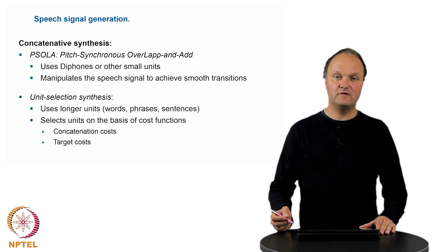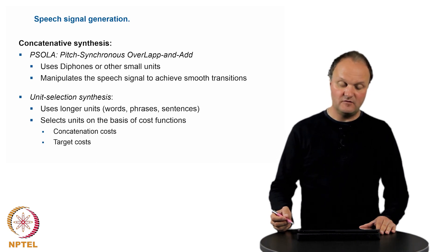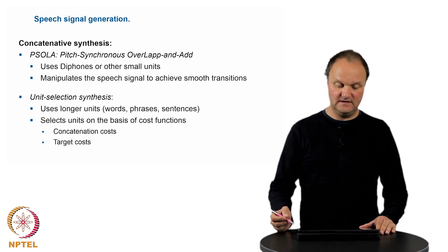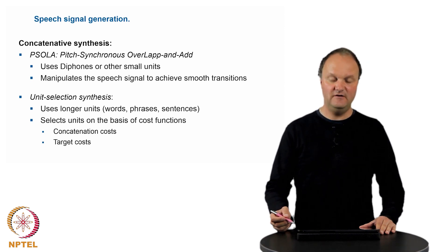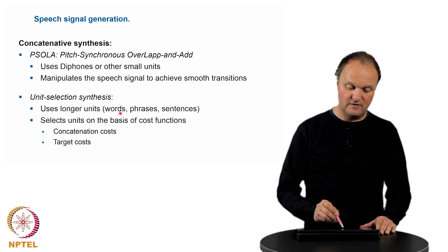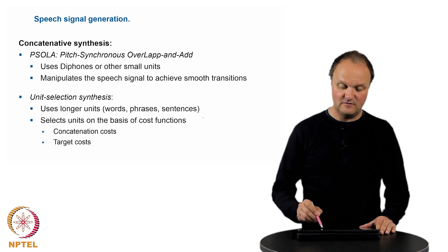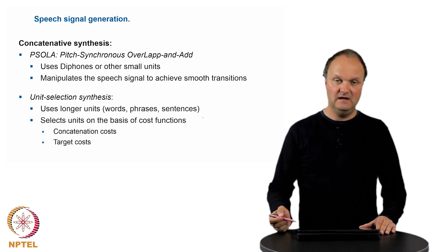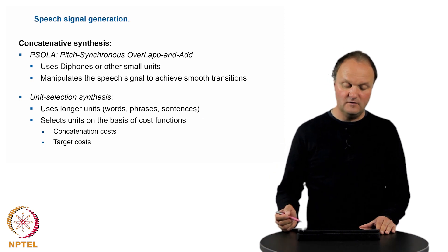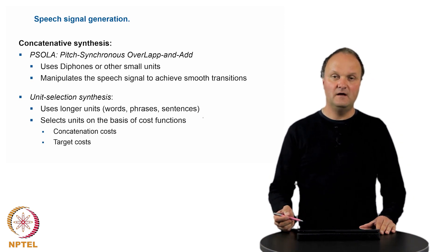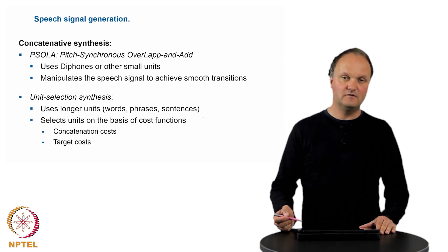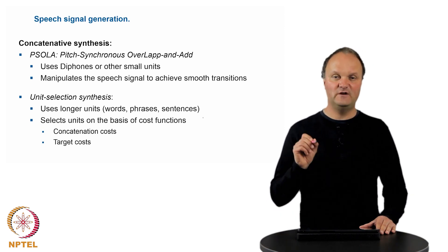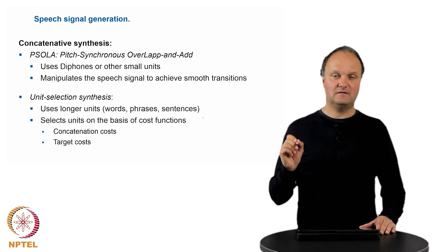People have tried to avoid this unnaturalness by putting less manipulation into the speech signals, and this can be achieved by taking longer units, for example, words or phrases or sentences. If we concatenate those longer units, we have to find the ones which are fitting best to the speech signal to be produced, but also which fit best amongst themselves.